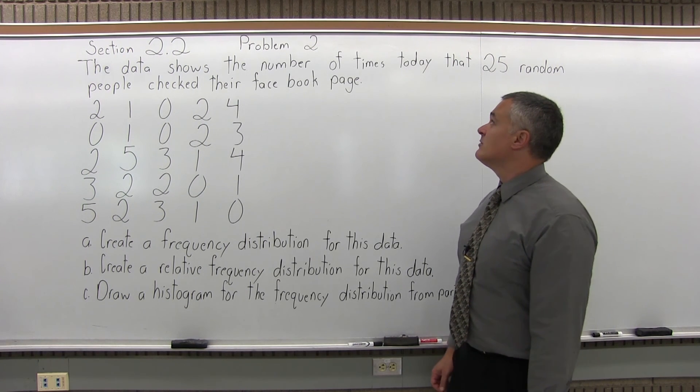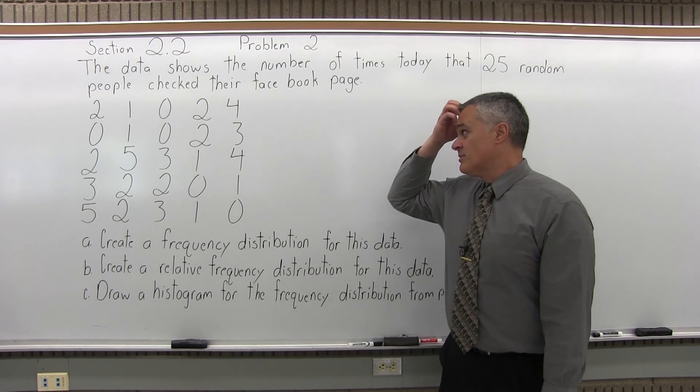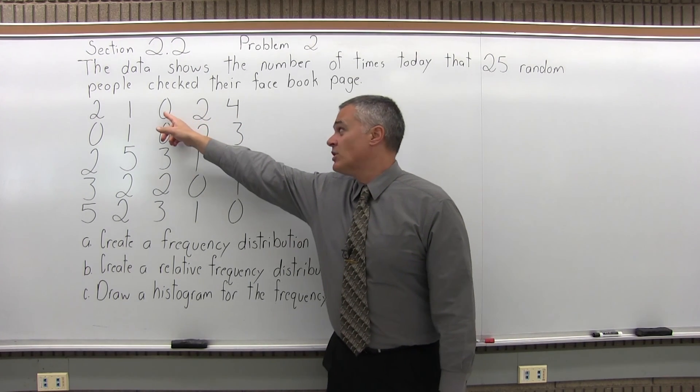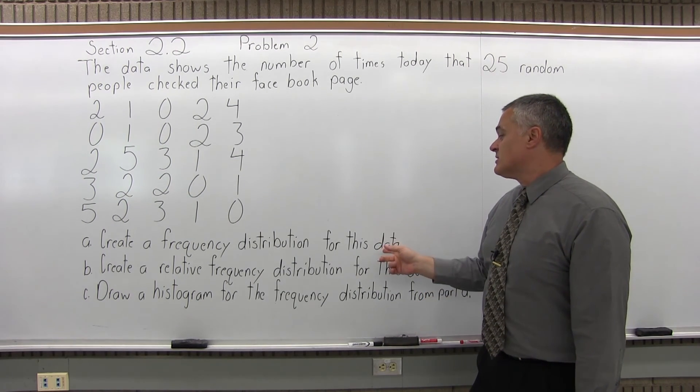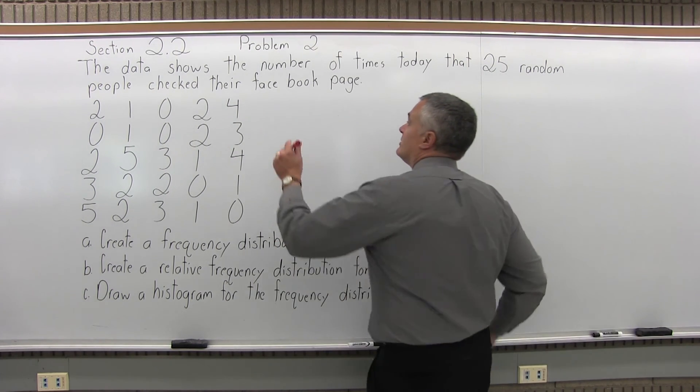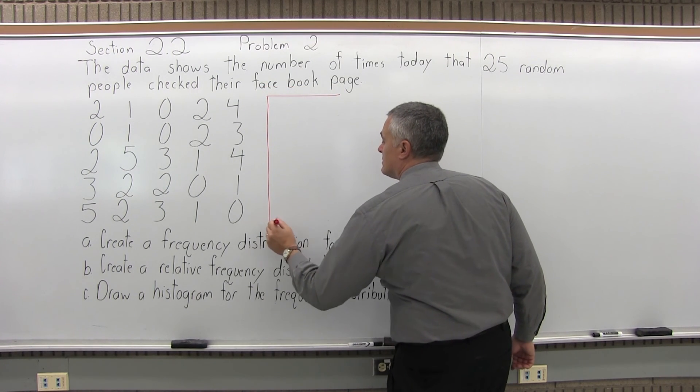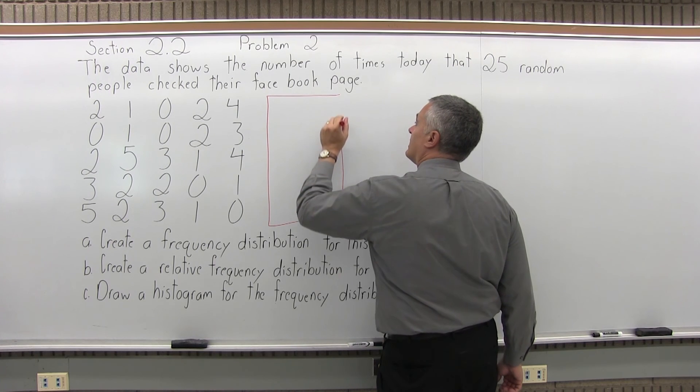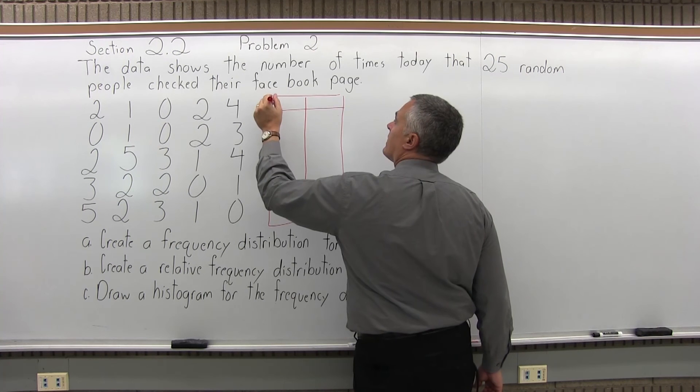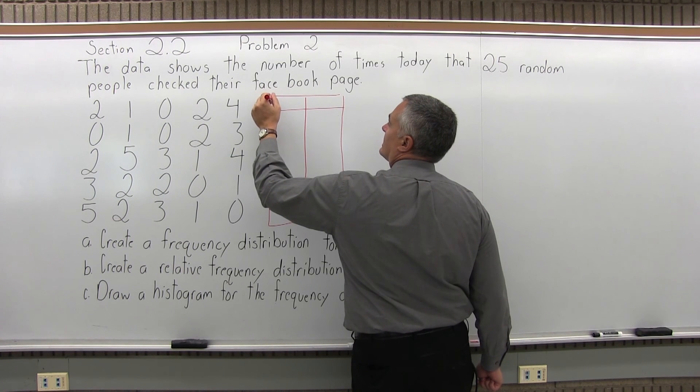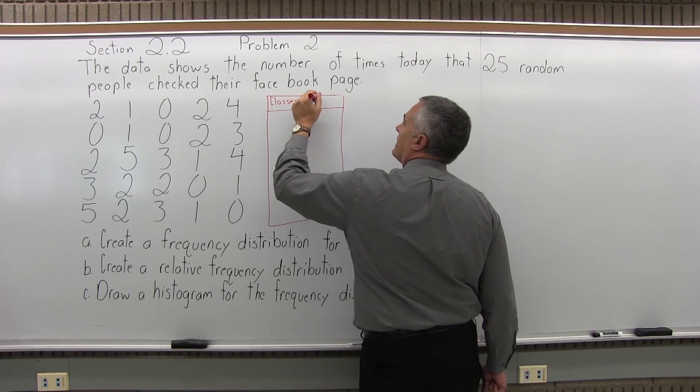It says the data shows the number of times today that 25 random people checked their Facebook page. So some people checked two times, not at all, etc. Part A says create a frequency distribution for this data. So a frequency distribution is going to be a chart with two columns. One column for the different classes and the other column for the frequencies.